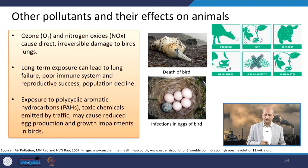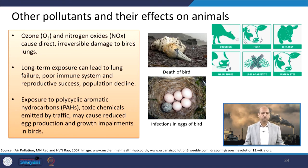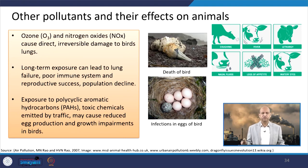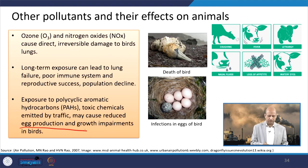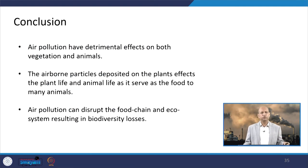Other pollutants and their effects on animals can be seen in this table. Ozone and nitrogen oxides can cause direct or irreversible damage to birds and their lungs. Long-term exposure can lead to lung failure, poor immune system, reduced reproductive success, and population decline. Exposure to polycyclic aromatic hydrocarbons (PAHs) and toxic chemicals through different pathways can reduce egg production, cause growth impairments, and lead to infections. Different kinds of effects can come from different air pollutants.